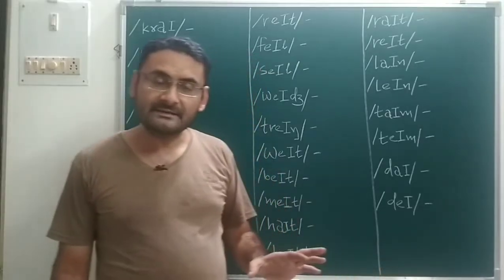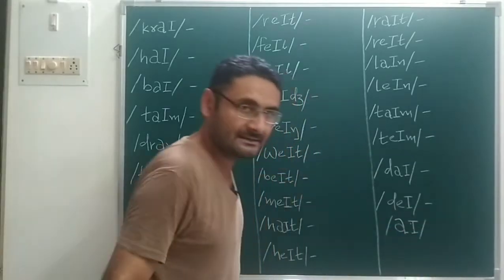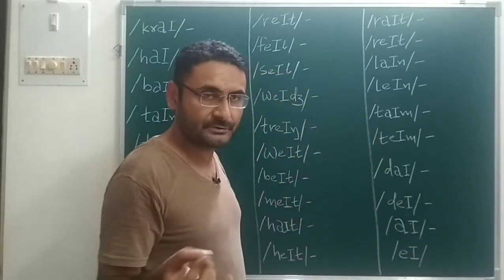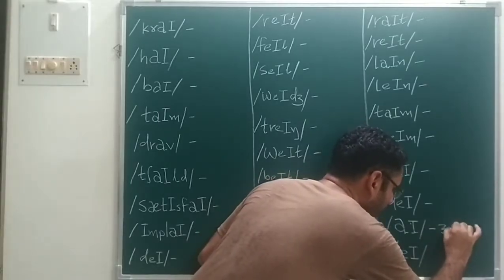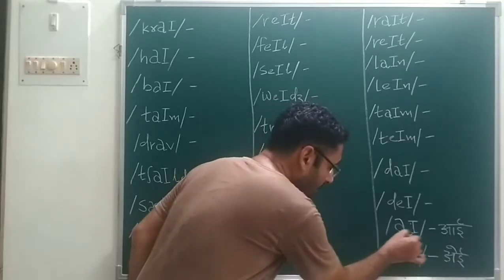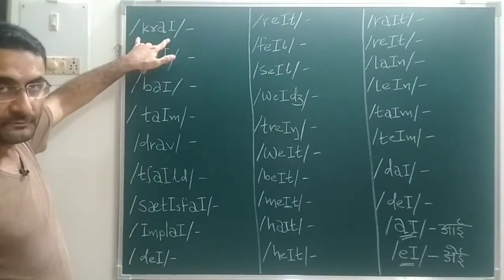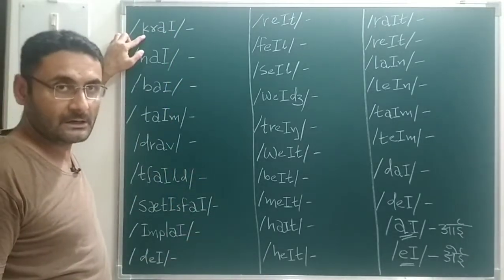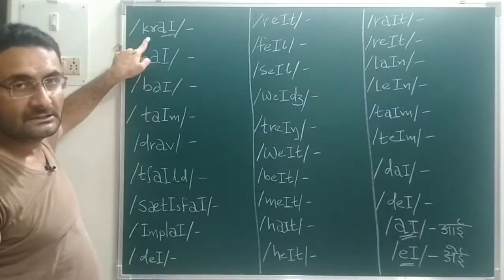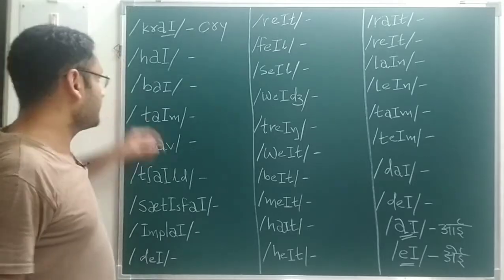In this video basically two sounds are discussed. The first IPA symbol is the 'I' sound — remember, the word pronounced by that symbol is 'I' (as in the vowel A-sound). So the first example: K sound, R sound, then I — that gives us 'cry'. Over here I will write: cry.